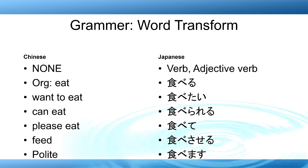Let's move on to word transform. In Chinese there's totally no word transform — you don't change any words to other forms. But in Japanese, verbs and adjectives usually transform based on what you want to express. For example, the original form of 'eat' in Chinese is just 'eat' — you don't change it to ate or eaten, it's always 'eat.' And 'eat' in Japanese is taberu, that's the original form of the verb.